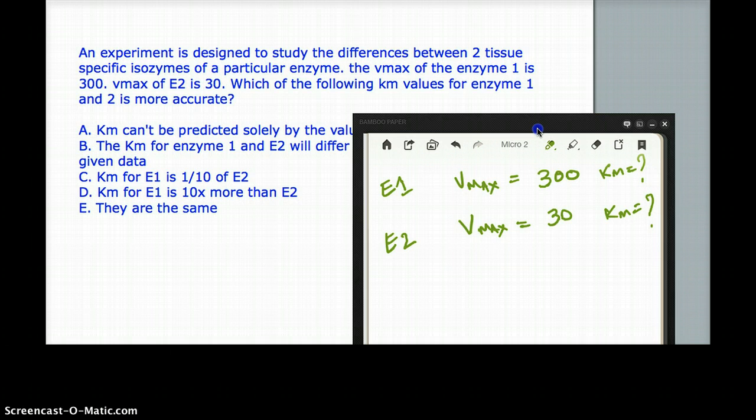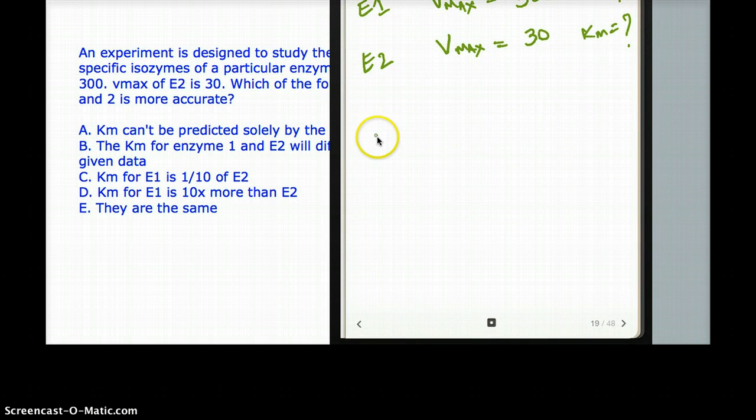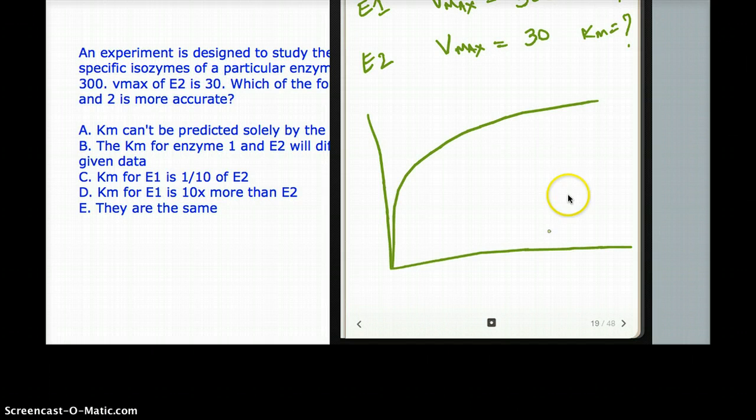So one graph that I did not talk about before, I am bound to talk about it now because there is no getting away from it, was this graph. Usually questions don't come from this graph but they are coming now so we have to talk about it. On the x-axis we have the substrate and on the y-axis we have the velocity.